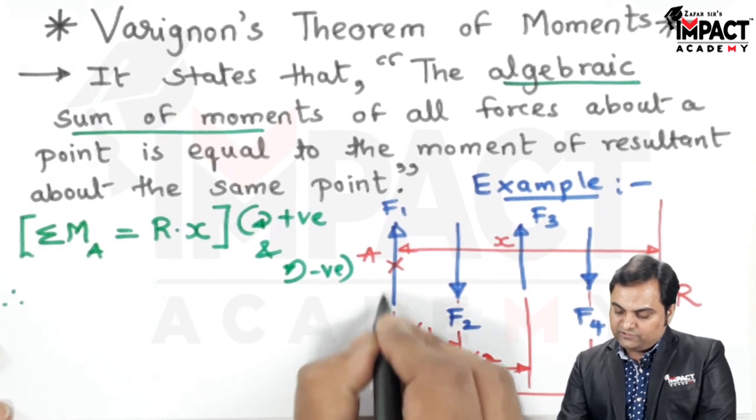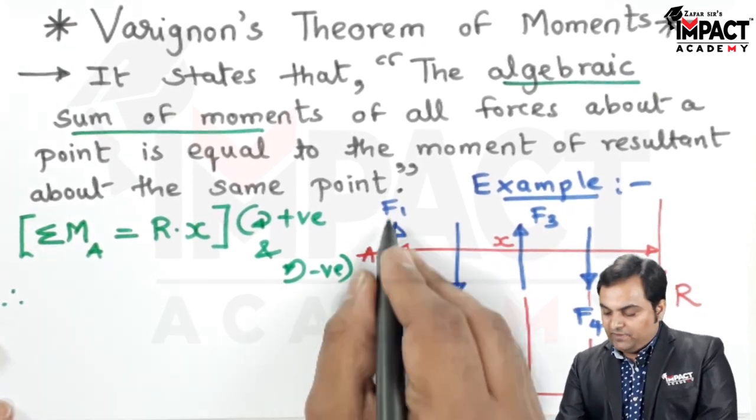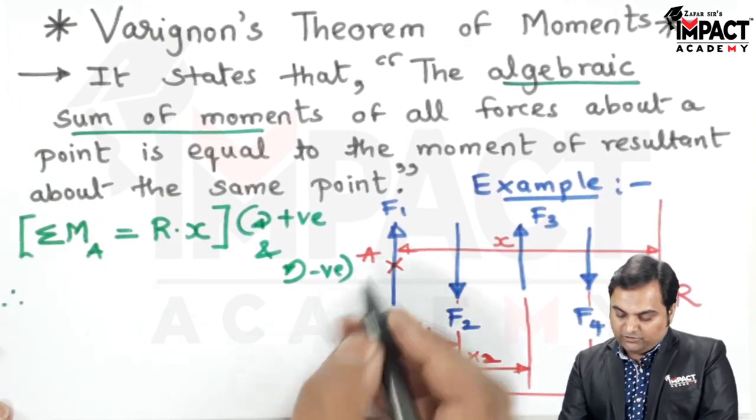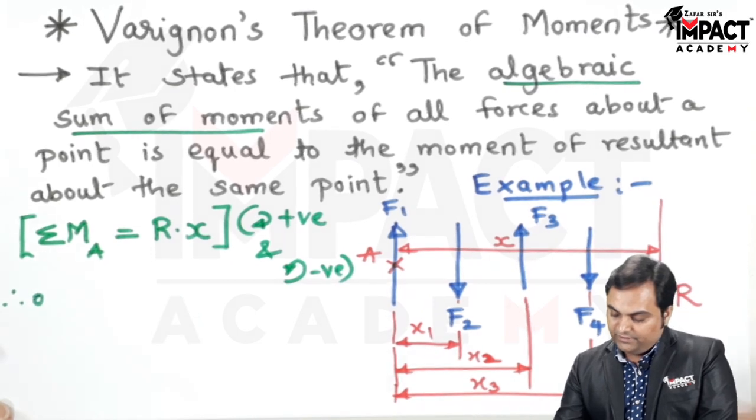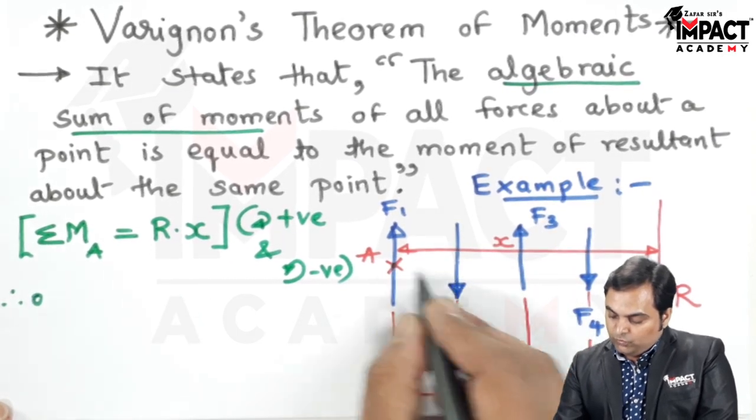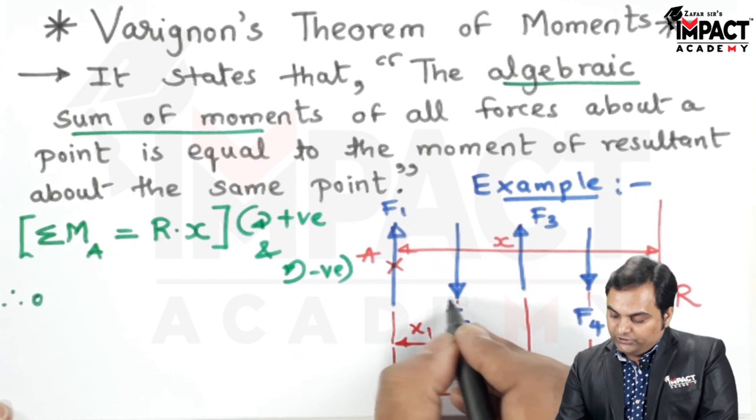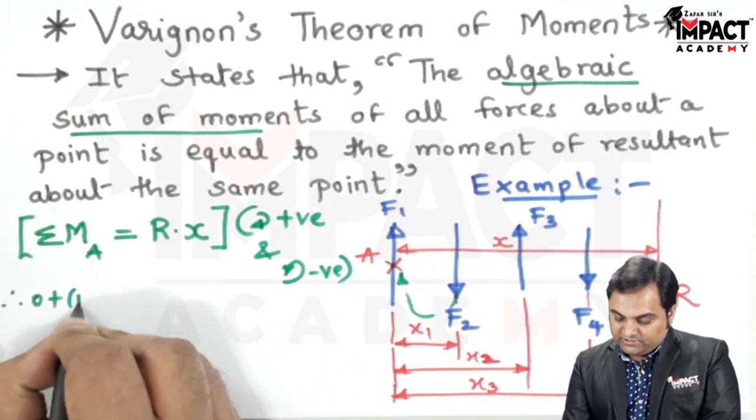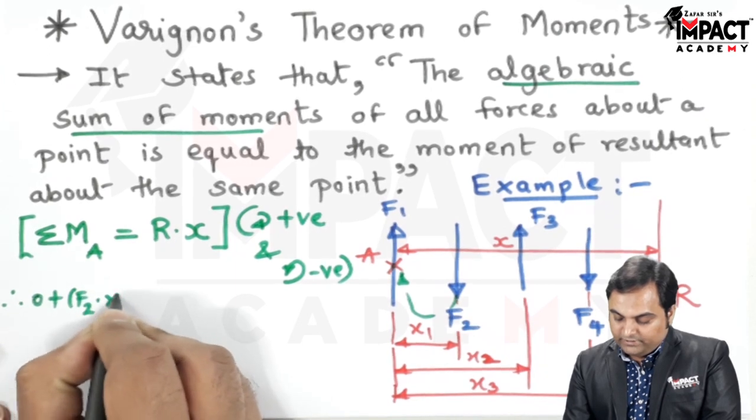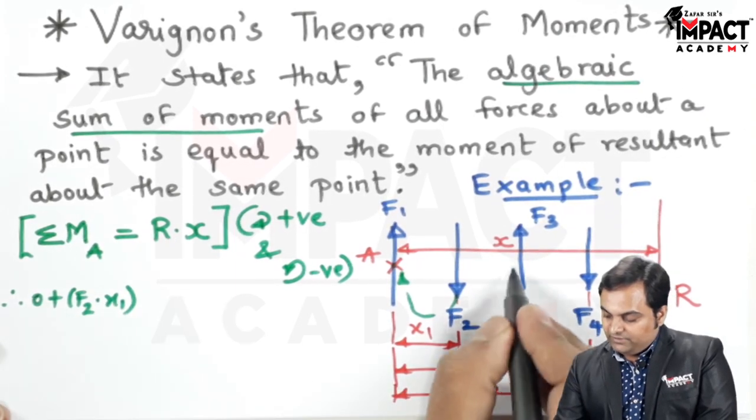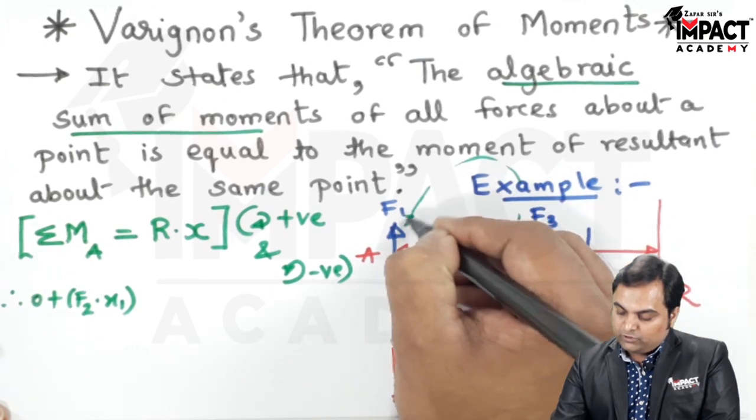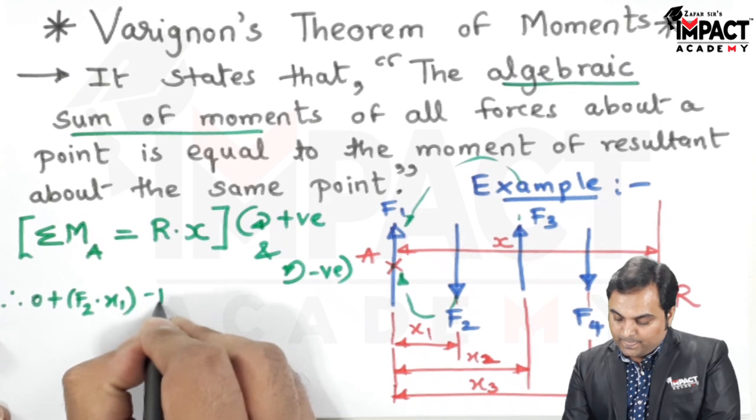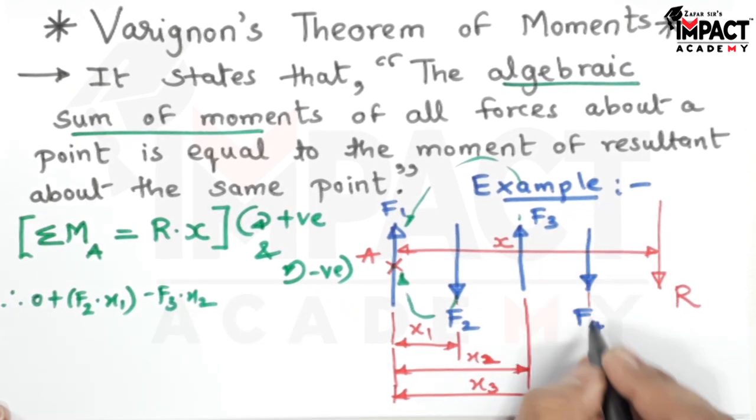I will start with the first force F1. Since it is passing through the same point where we want to take the moment, there is no perpendicular distance, so its moment would be 0. Then here we have F2. When I take the moment about point A, this would be in clockwise direction and it is taken as plus, so it is plus F2 into X1. Then we have F3 acting upward, so it would be producing anti-clockwise moment, so minus F3 into distance X2. Then we have F4 again acting downward. When I take the moment at A it would be in clockwise direction, so plus F4 into X3.